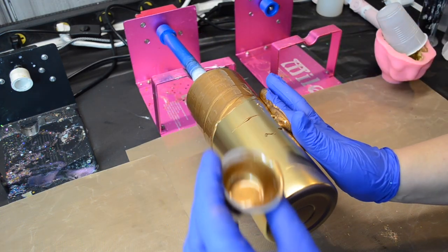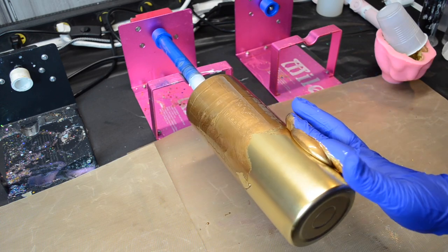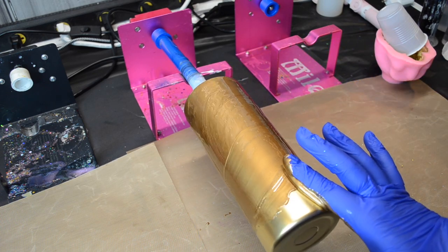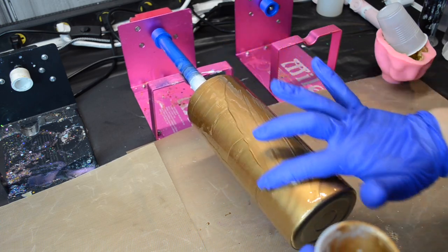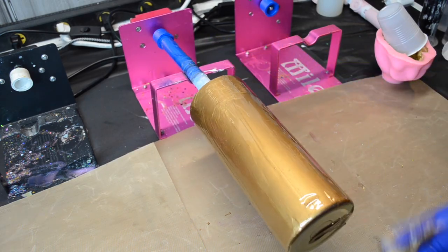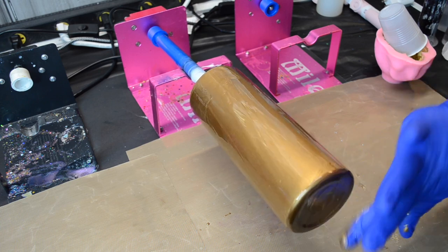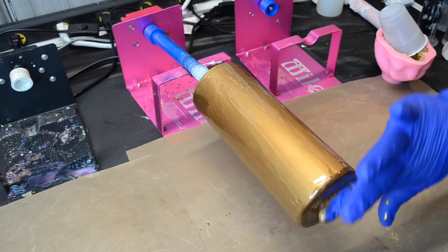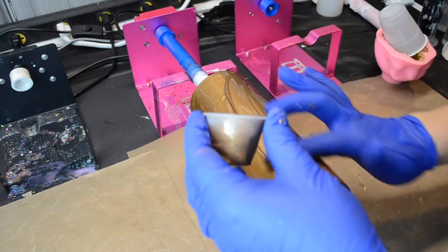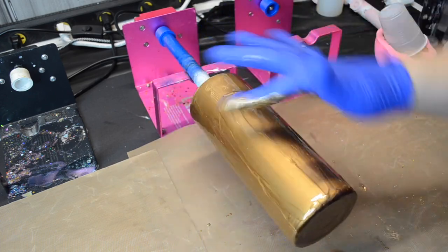As I apply this mica it will leave kind of like a streaking pattern and you'll see how I try to fix that here in a bit but I'm okay with that. This is the base layer of a peek-a-boo and I do want a little bit of movement in that mica so you'll see how I remedy that with my heat gun.